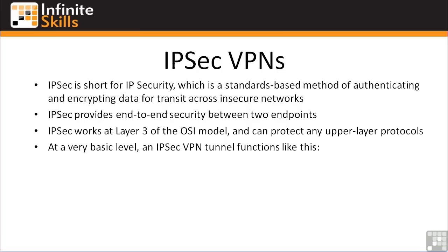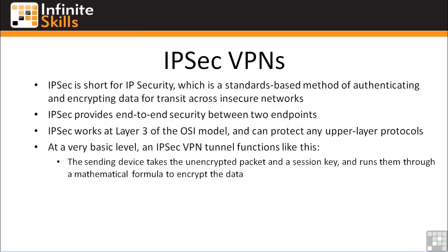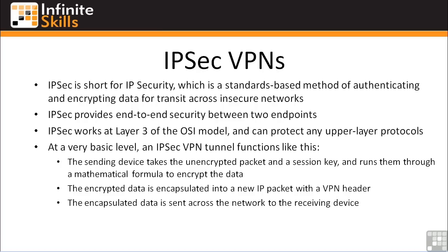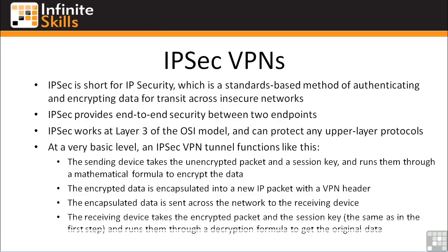At a very basic level, an IPsec tunnel functions like this. You have a session key in your sending device. The sending device takes the unencrypted packet and a session key, runs them through a cryptographic mathematical formula, and encrypts the data. That encrypted data is then placed inside a new IP packet with a VPN header containing information about how to decrypt the packet. It's then sent across the internet to the receiving device, which takes the encrypted packet and the same session key and runs them through the decryption formula to get the original data out.